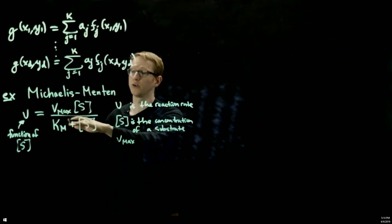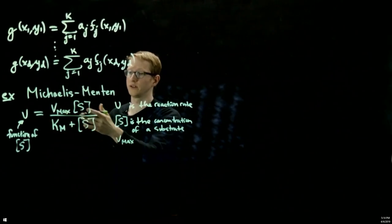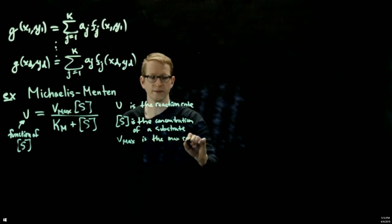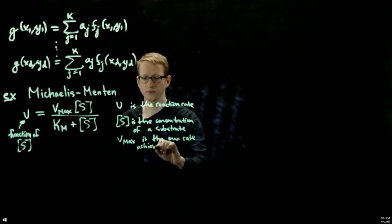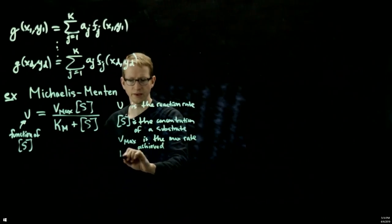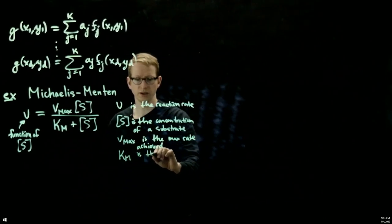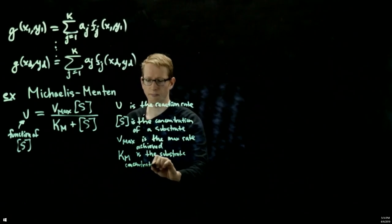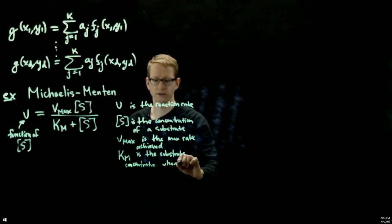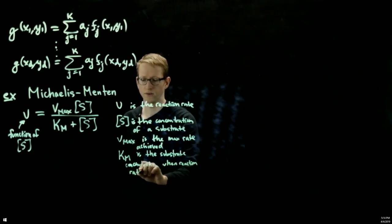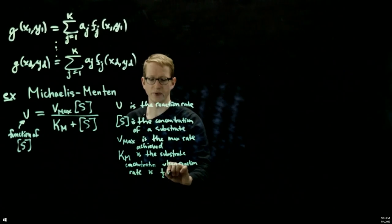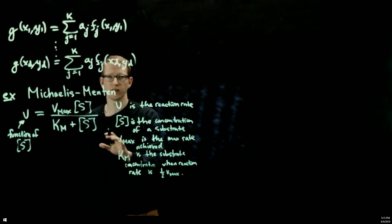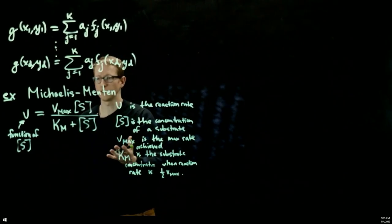vmax and kM here are unknown constants, and we'll actually use data to figure these out by using the least squares approximation. So this is the maximum rate achieved by the system. And kM is the substrate concentration when the reaction rate is half of vmax.